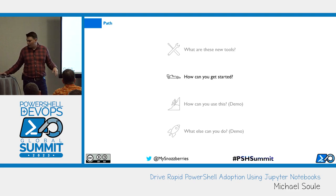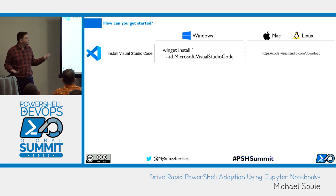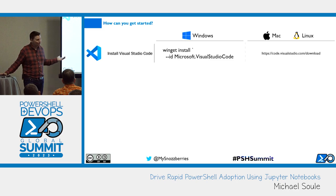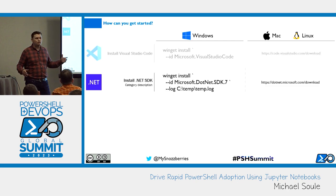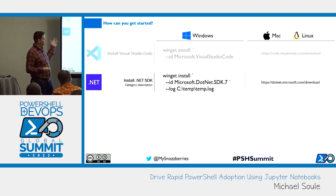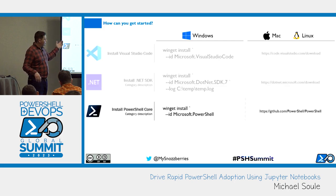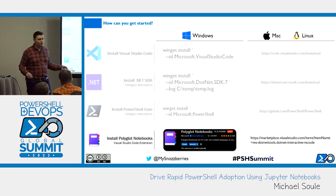Getting started, there are three things you need as prerequisites. You need VS Code or some other authoring software. When you install VS Code, you need the .NET SDK so you can run PowerShell Core. All your Jupyter kernels are effectively running on a Linux operating system, so keep in mind that .NET Core is going to be your foundation there. And then PowerShell Core. Once you have that, you can just install the notebook extension and you're up and running.